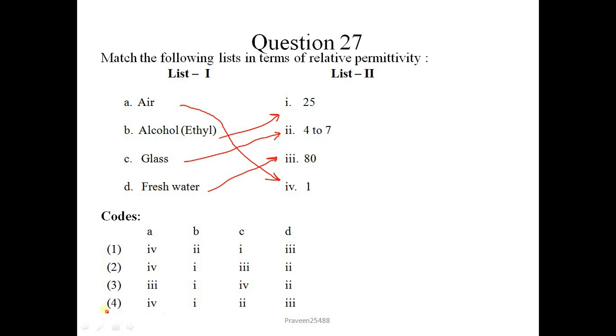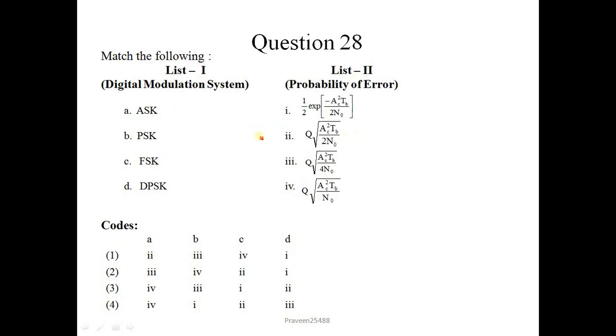Here is question number 28. In list 1, digital modulation systems are given and their corresponding formula for probability of error is given. For ASK, the formula is Q of square root A squared T upon 4N0. For PSK this one is the formula. And for FSK this one. And for DPSK that one. So correct option is 3, 4, 2, 1. Correct option is 2.